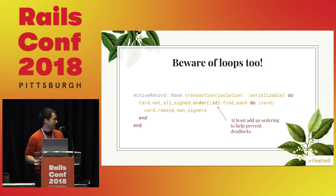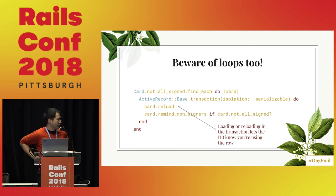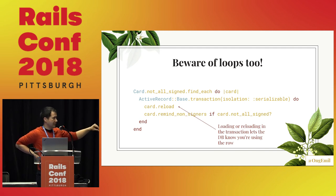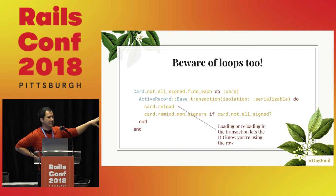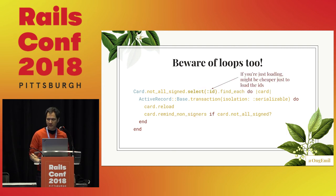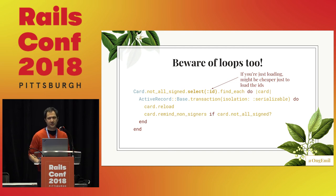A better idea would be to get all the cards that might need a reminder, then do a transaction around each one, and explicitly do a reload within the transaction block to say 'go get this from the database again, tell it that we're using this data,' and then make our decision based on what we read within the transaction and send it if need be. A little trick: you can just select the ID, and then if you do a reload it'll actually reload all the fields for you.